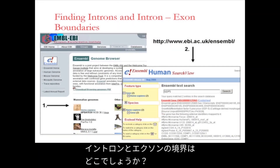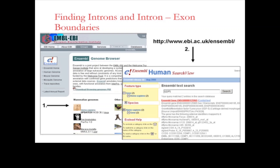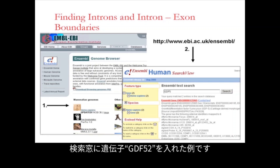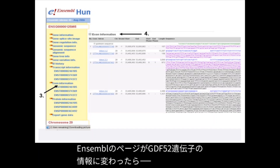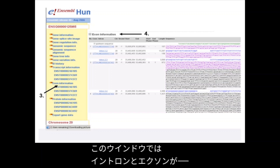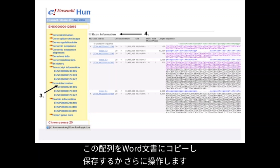Where do you find intron and exon boundaries? If you want to design primers over an intron-exon junction, NCBI is a very informative database for identifying gene intron-exon boundaries. We will use the gene GDF52 as an example in the search window. Once the NCBI page has loaded with information for the GDF52 gene, you can go to the left-hand side of the screen and click on genomic sequences. A new window will appear where introns and exons are distinguished by different colors. You can then copy this sequence into a Word document to save or further manipulate it.